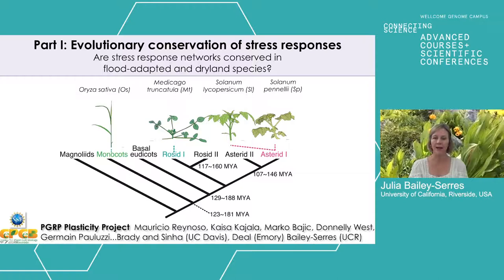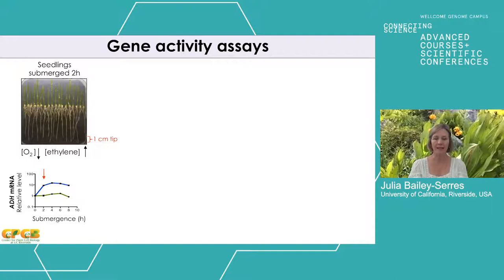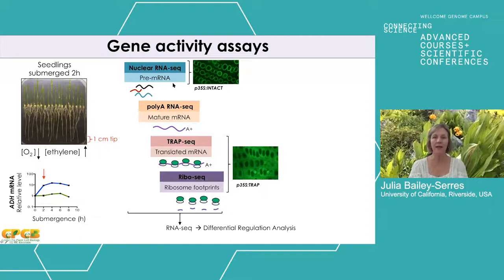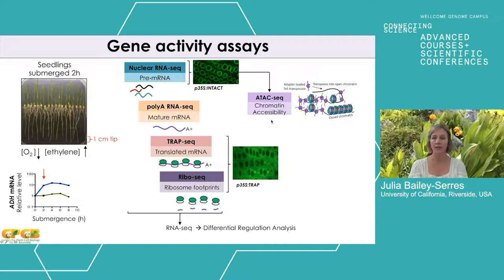In this study, we decided to look at a very simple assay of gene regulatory readout. By growing plants on plates and submerging them for two hours, we evaluated the response to sudden submergence where oxygen levels within cells decline and ethylene levels increase. We chose a two-hour time point because for all four species, there was a dramatic increase of a key anaerobic response gene. We then compared nuclear RNA, total RNA, TRAP translated mRNA, and ribosome footprinting readouts, and also performed ATAC-seq looking at chromatin accessibility.